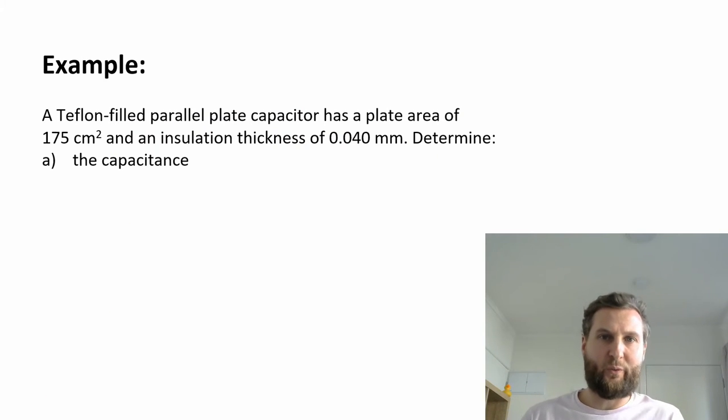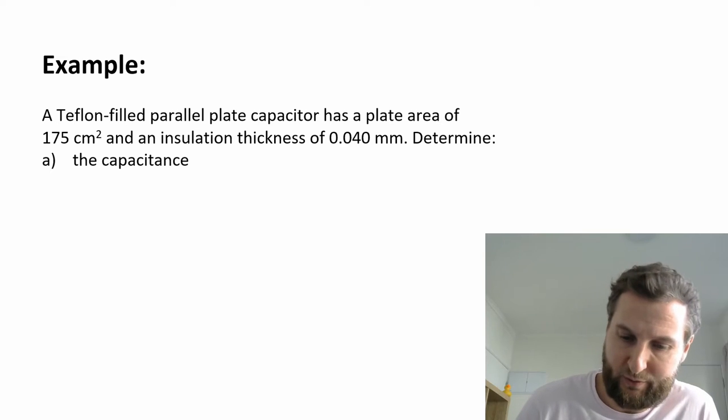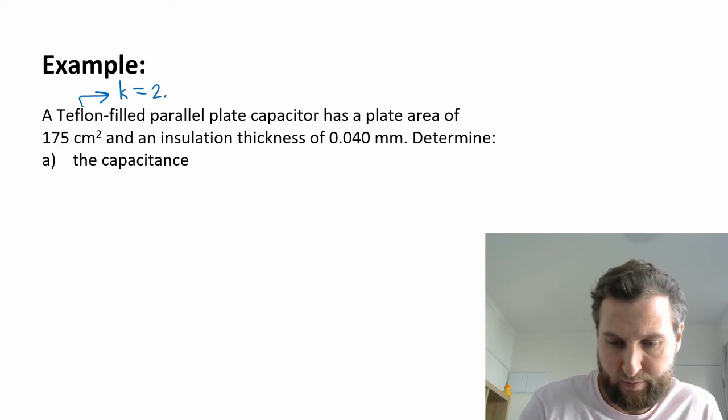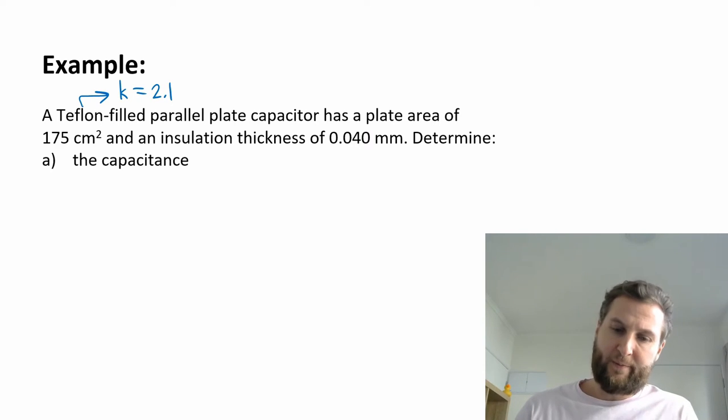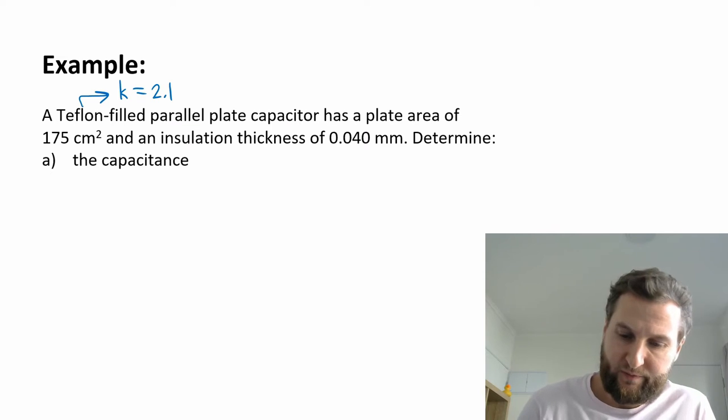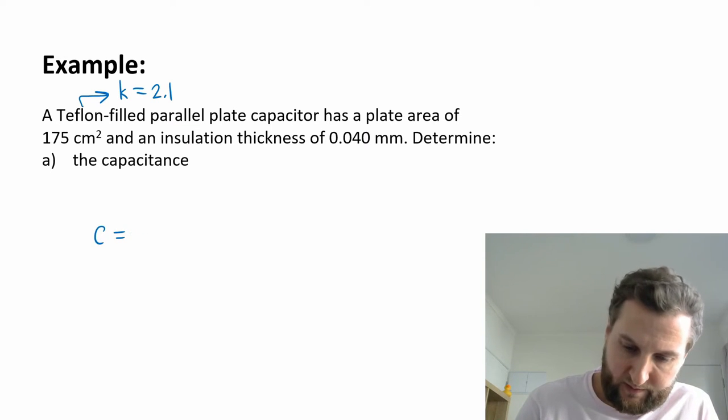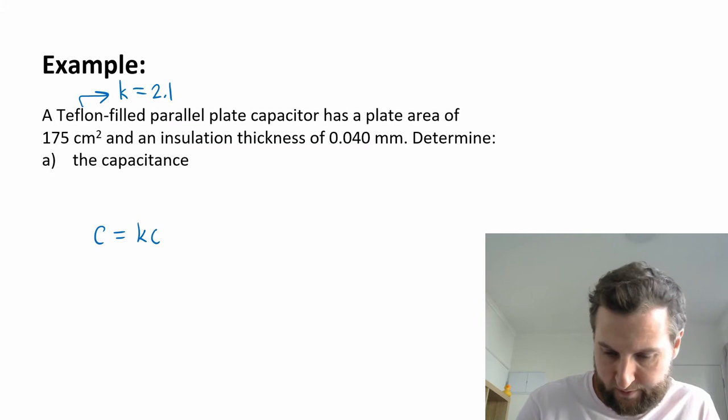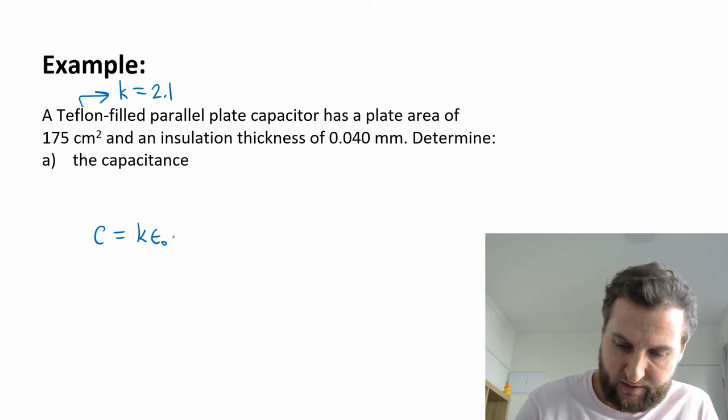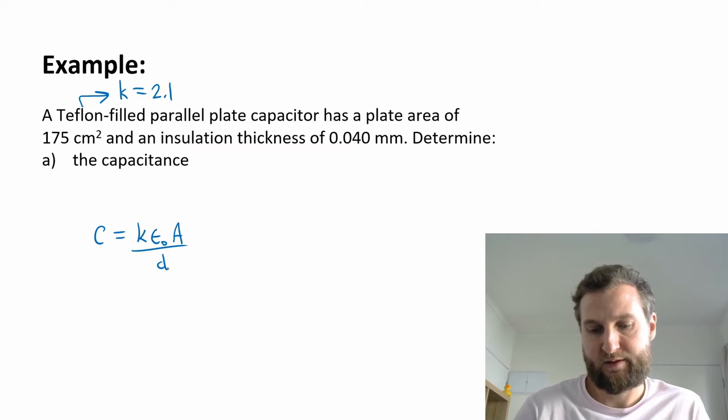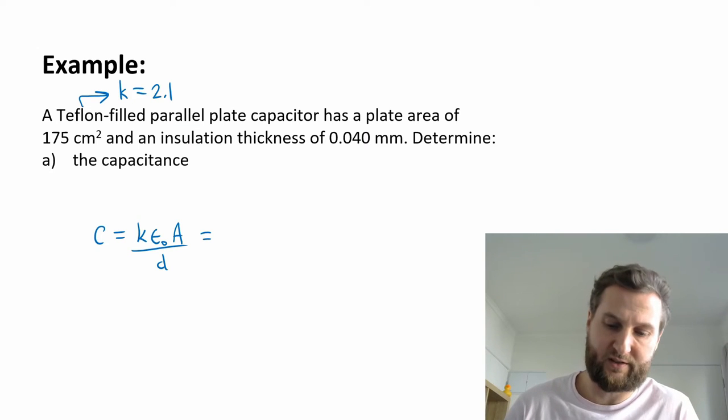Let's look at an example with Teflon being sandwiched in between the plates. My kappa value for Teflon was 2.1, so I'm going to use that in my equation. Capacitance overall now is going to be kappa times my permittivity constant times area divided by distance, distance between the plates. I wrote my formula a little bit different, but that's okay.